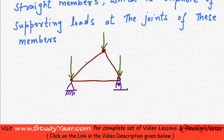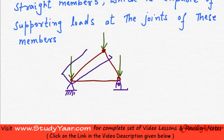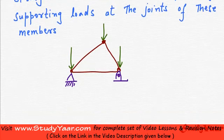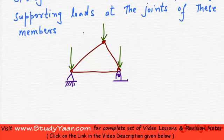By the way, understand that these members could be rods, could be beams, could be anything. Now we are going to look at a particular member — this one. Let us try to draw the Free Body Diagram (FBD) of this particular member, so I am going to have this member like this.